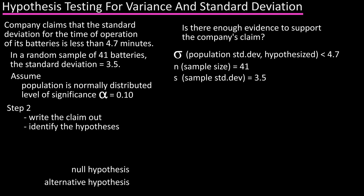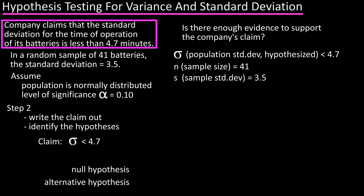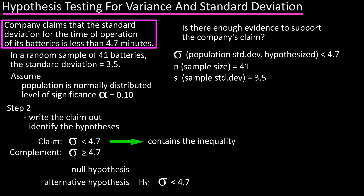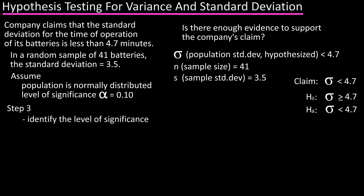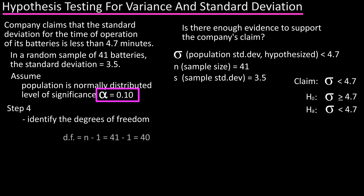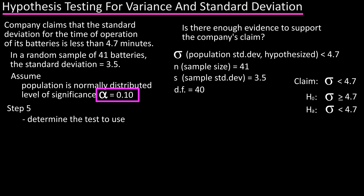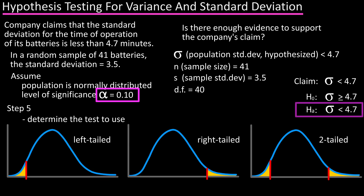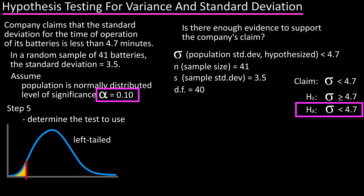Step two is to write out the claim and identify the null and alternative hypotheses. The claim is that sigma, the population standard deviation, is less than 4.7. The alternative hypothesis contains a statement of inequality, so Hₐ: sigma is less than 4.7. The null hypothesis contains a statement of equality, so H₀: sigma is greater than or equal to 4.7. Step three: the level of significance is alpha equals 0.10. Step four: degrees of freedom is n minus one — 41 minus one equals 40 degrees of freedom. Step five: because the alternative hypothesis contains the less than inequality, this will be a left-tailed test.